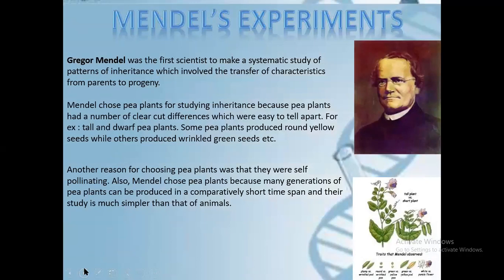Mendel's experiment. Gregor John Mendel was the first scientist who made a systematic study of a pattern of inheritance, which involved the transfer of characteristics from parents to progeny. Mendel chose a pea plant for studying inheritance because the pea plant had a number of clear-cut differences which were easy to tell apart.